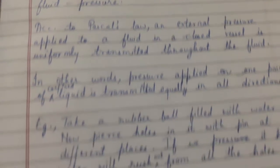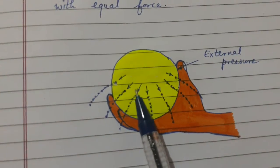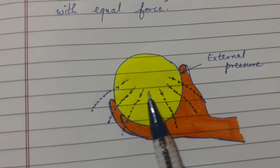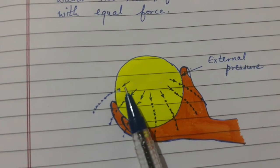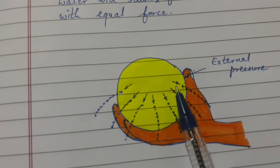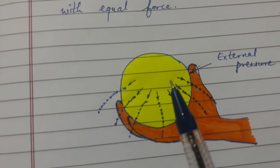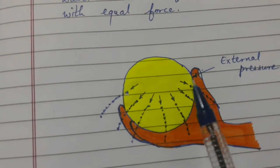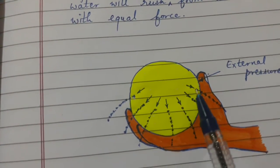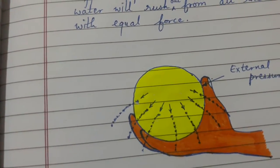Let us understand this with an example. Take a rubber ball filled with water. Now pierce holes in it with a pin at different places. If we press it hard, water will rush out from all the holes with equal force.